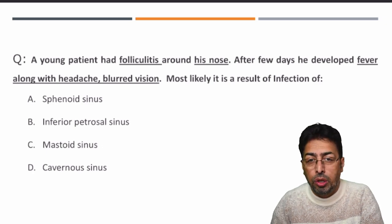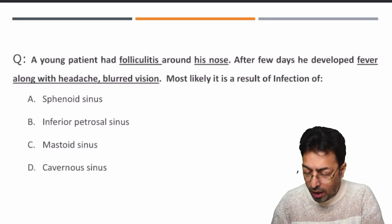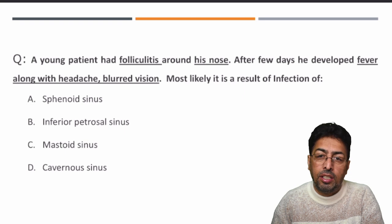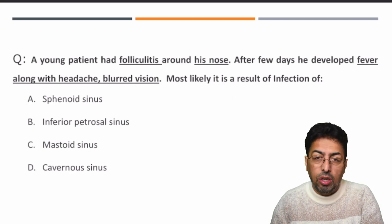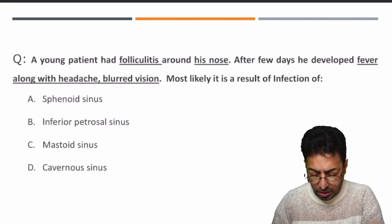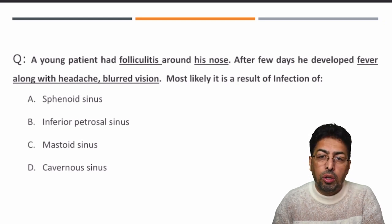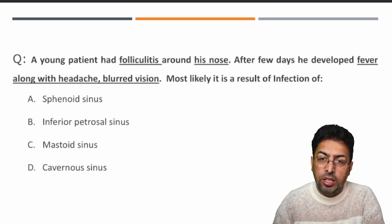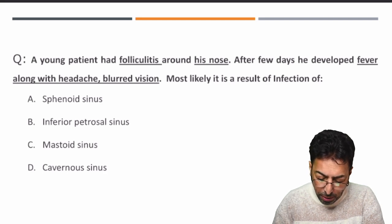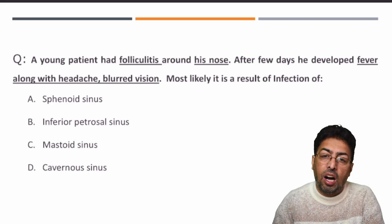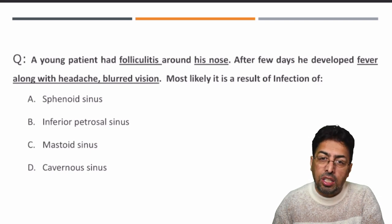We have folliculitis — inflammation of the follicles — around the nose area, followed by development of fever, headache, and blurred vision. Among the options, the mastoid sinus is an ear sinus, and the inferior petrosal sinus and cavernous sinus are venous sinuses. So there are two types: venous sinuses and ear sinuses.